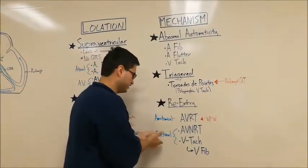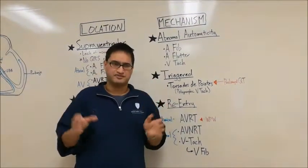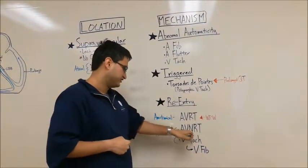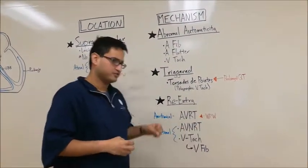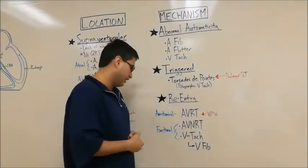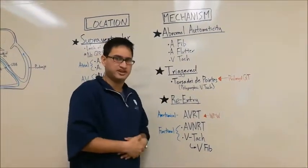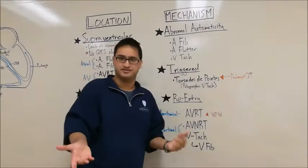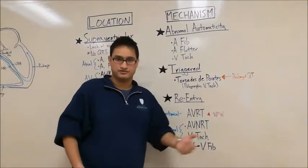Now you can also get a functional re-entry tachycardia, which is when your loop is not actually several pathways, but it's more like tissue heterogeneity. And AVNRT stands for atrioventricular nodal re-entry tachycardia. This is where your functional loop is literally at the AV node itself. And you can also get this in ventricular myocytes, in which case it would lead to VTAC because you get the really fast loop happening in your ventricular myocytes. And as we mentioned earlier, VTAC can devolve into VFib and then a cardiac arrest.